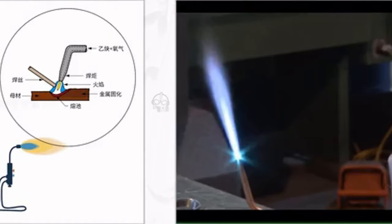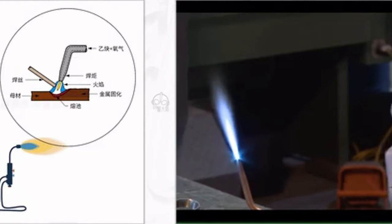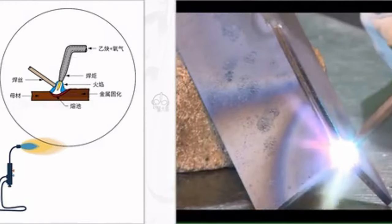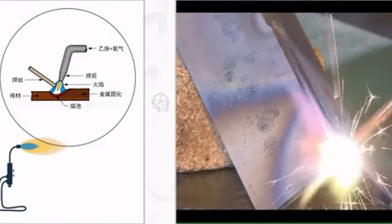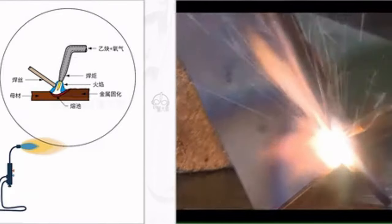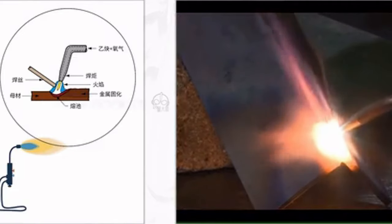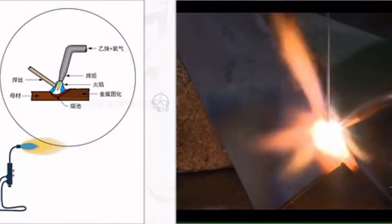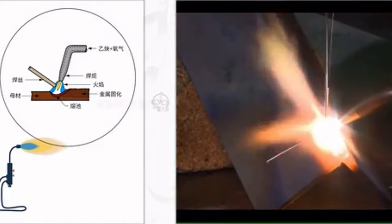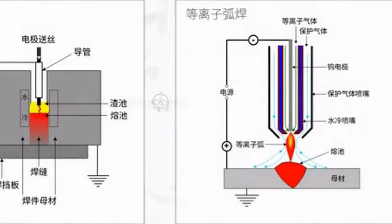During gas welding, the heated metal easily combines with oxygen in the atmosphere to form oxides, causing defects like pores and slag inclusions in the weld. To prevent oxide formation, gas welding flux is needed when welding non-ferrous metals, cast iron, and stainless steel. Gas welding flux can be directly added to the weld pool or applied to the welding wire, interacting with metal oxides or non-metallic inclusions to form slag that floats on the weld pool's surface, isolating the metal weld pool from the atmosphere, and improving weld performance.